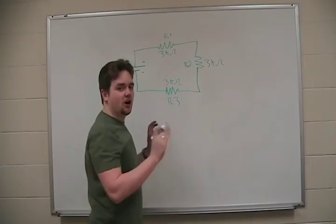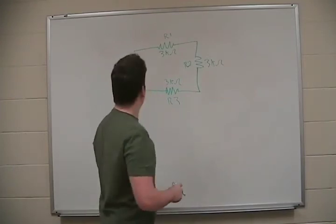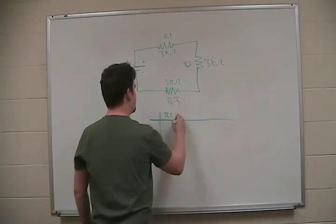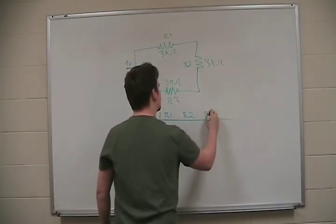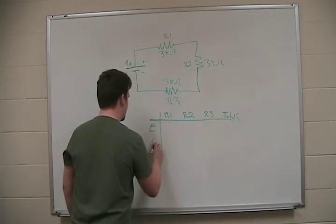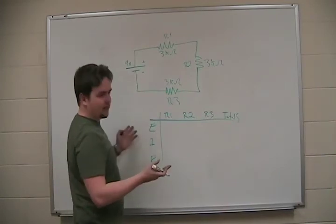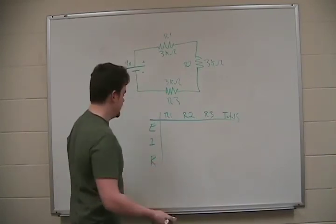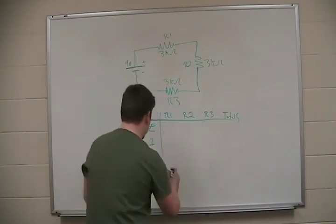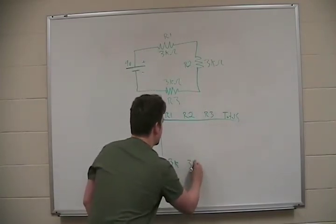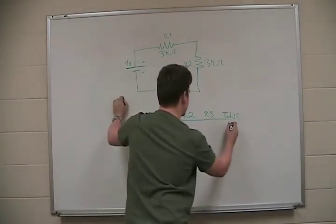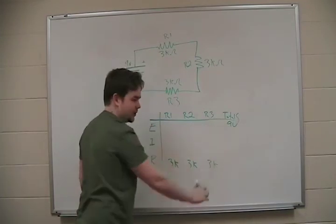First things first, we're going to make a table. This one is going to be R1, R2, R3, and totals. Voltage, current, and resistance. So, we're going to first things first, put in what we know. We know that each resistor for R1, R2, and R3 are each 3 kiloohms. So, remember that's 3,000 ohms each. 3K, 3K, 3K. We also know that the total voltage supplied to this circuit is 9 volts. So, that's our total voltage.